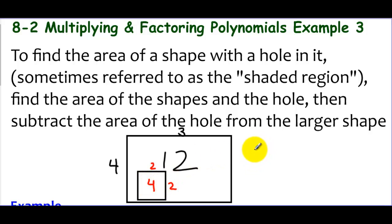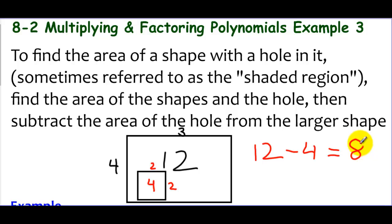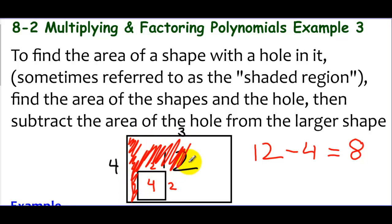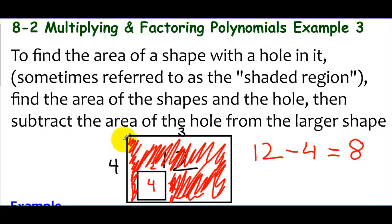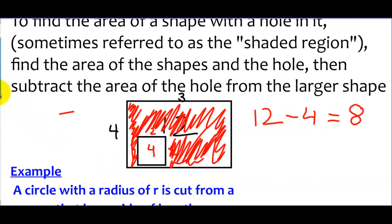So what I really did was take the whole area of 12 and cut a hole of 4 out of it, which means that's no longer part of the area, so I subtract it away. The remaining space left from the big rectangle is just 8 square units. This is the basic idea of a shaded region problem. All the space they want you to keep is colored in and called the shaded region. We find the area of the big space, find the area of the hole, and subtracting gives us the area of the shaded region.